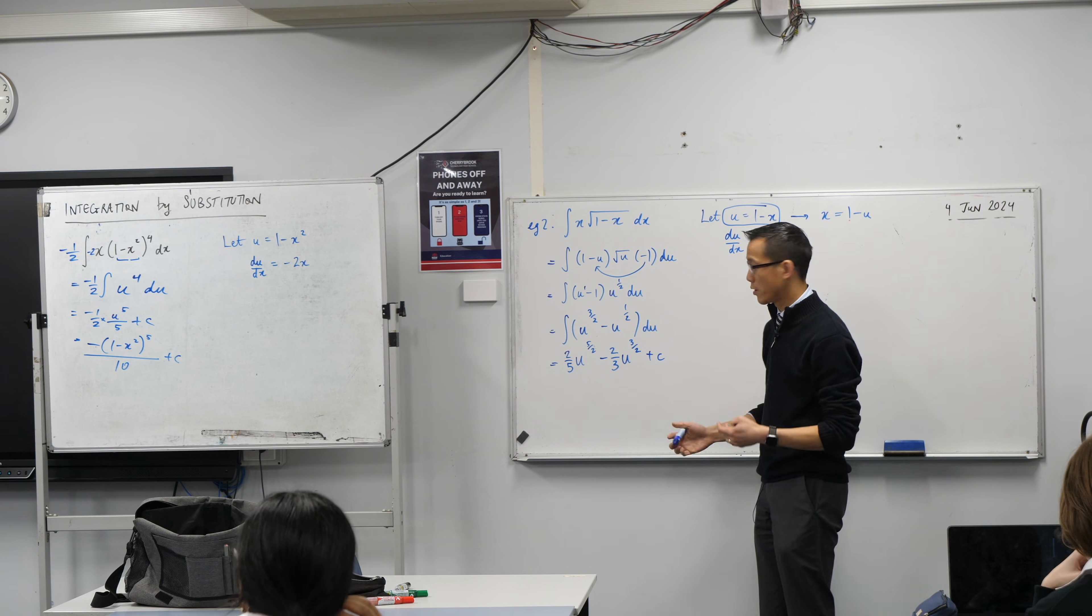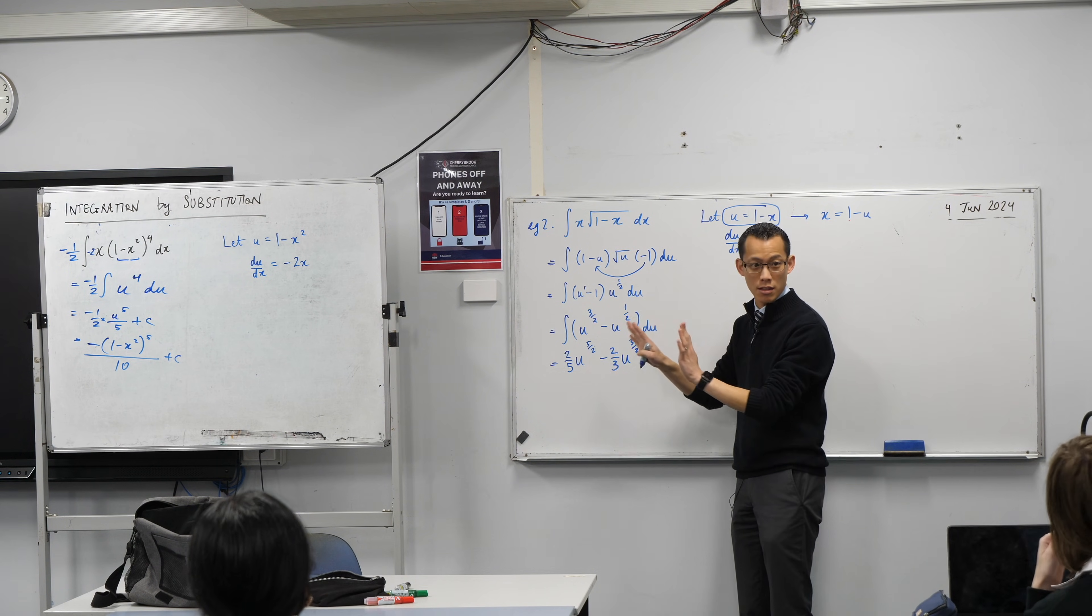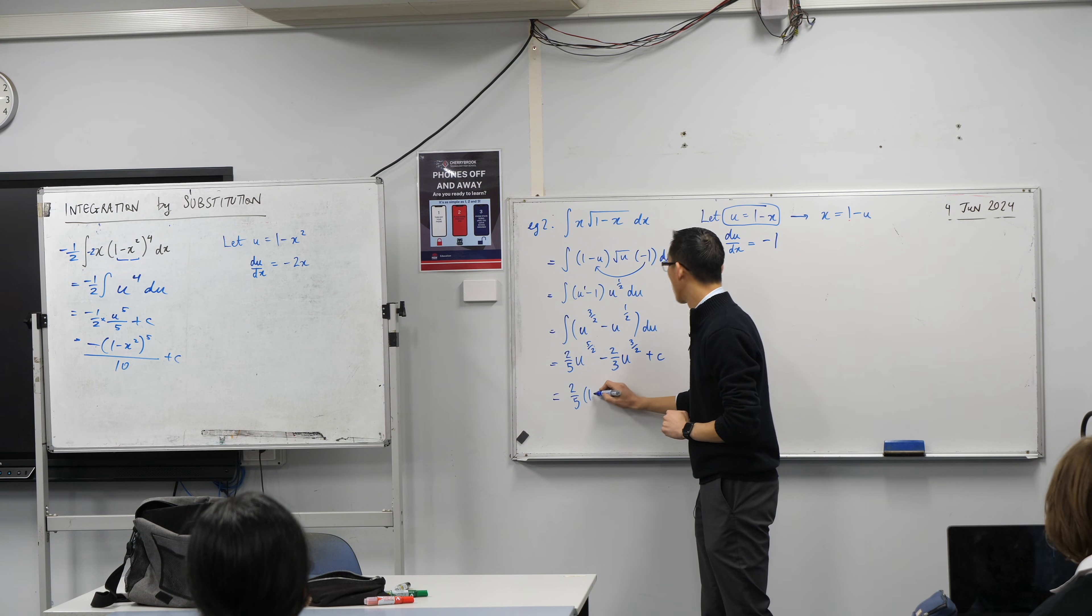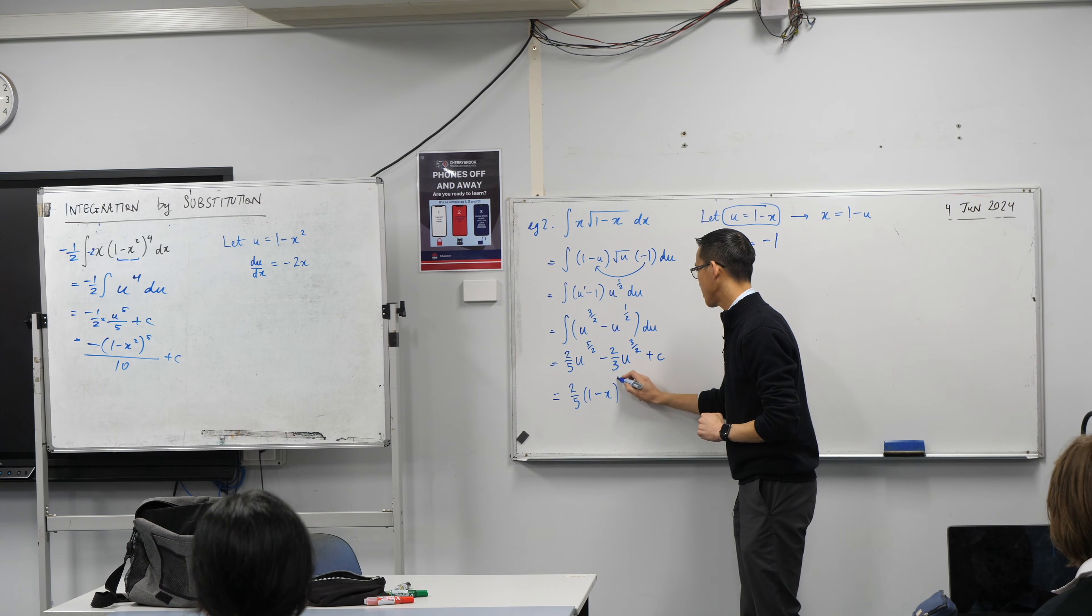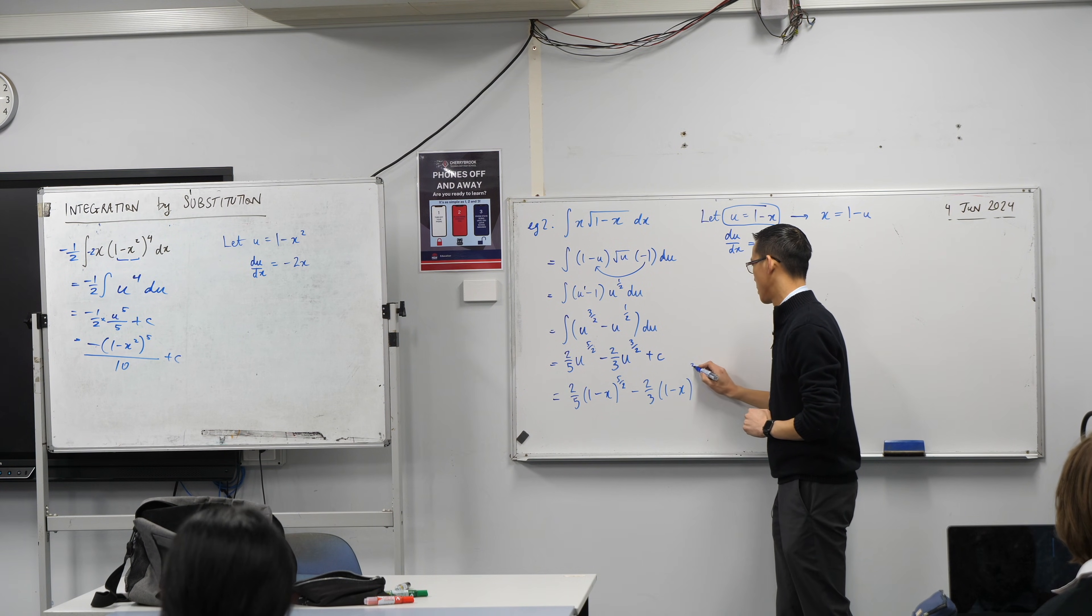And all that's left at this point is just to go back to get everything back in terms of x's, because I finished with the u's. All the integration is done, so let's just tidy it all up. (1 - x), minus 2 thirds, and I'm done.